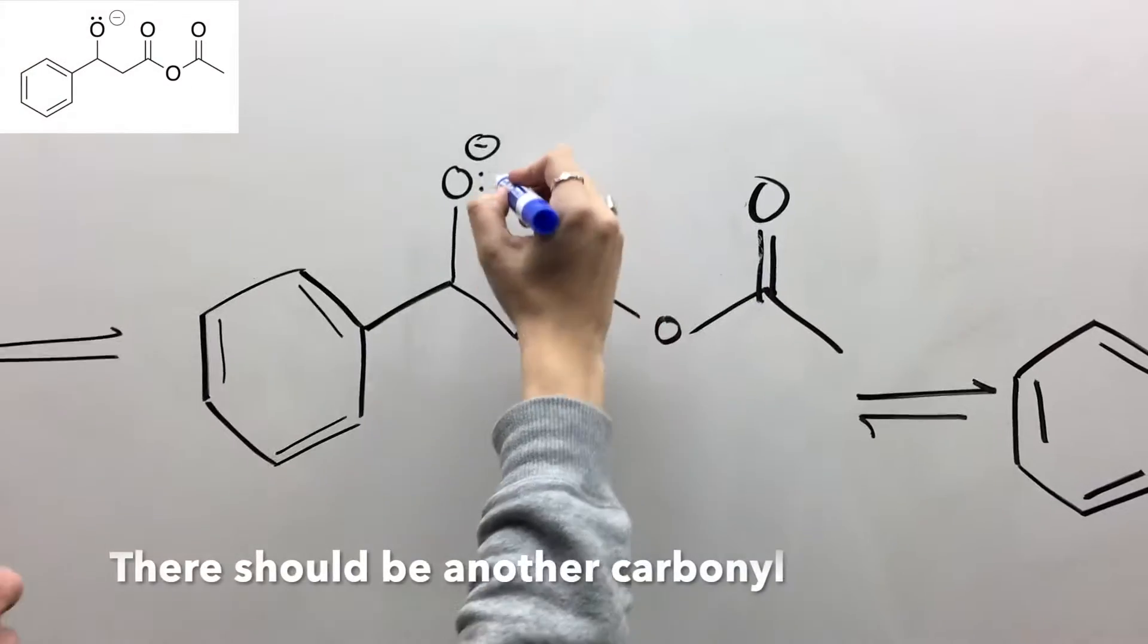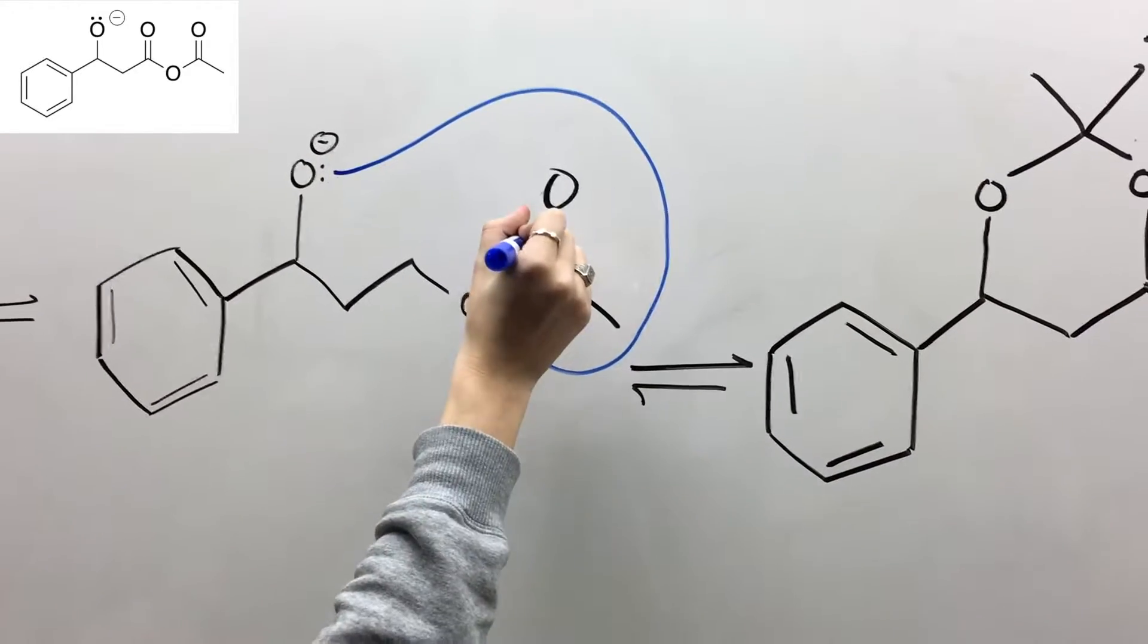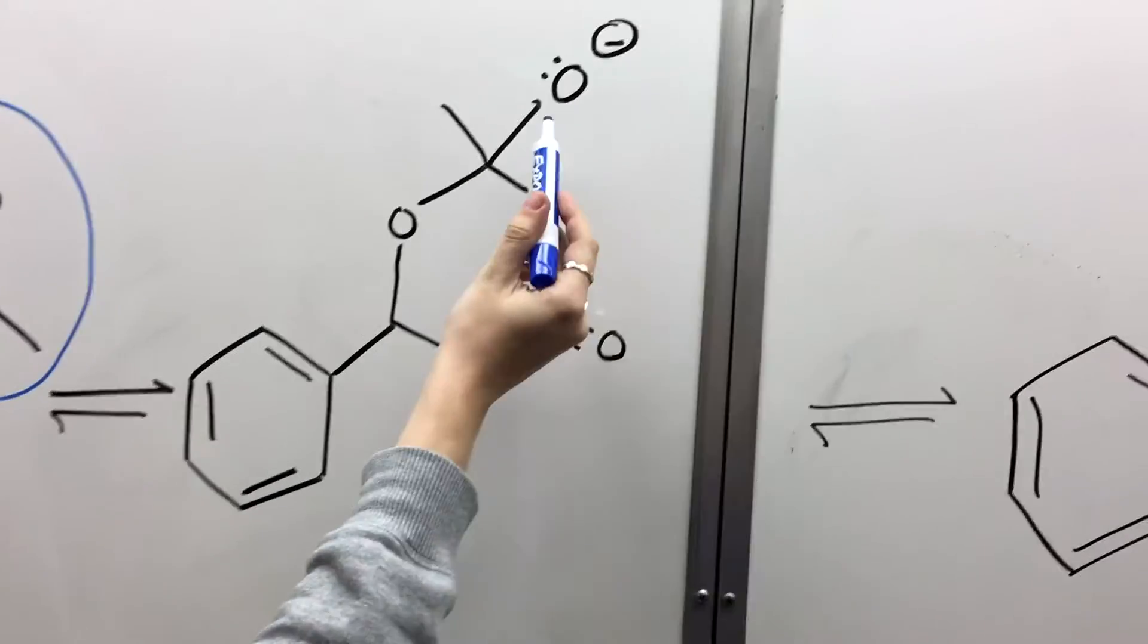The lone pair on this oxygen is going to swing over to attack the carbonyl carbon, and these electrons are going to swing up onto the oxygen. Then we have our oxygen with a negative charge.